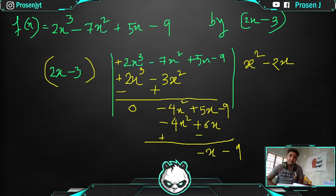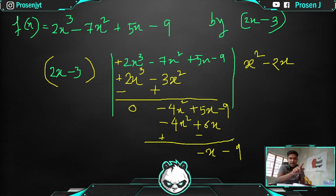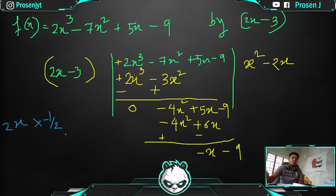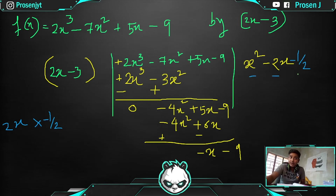Now the first term is −x. What do we multiply 2x by to get −x? That is −1/2. So multiply −1/2 with the entire divisor: −1/2 times 2x gives −x, and −1/2 times −3 gives +3/2. Now subtraction happens below.